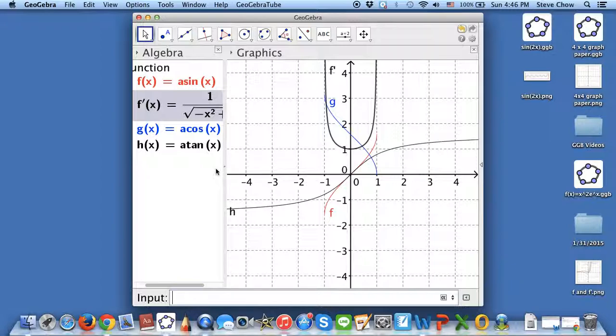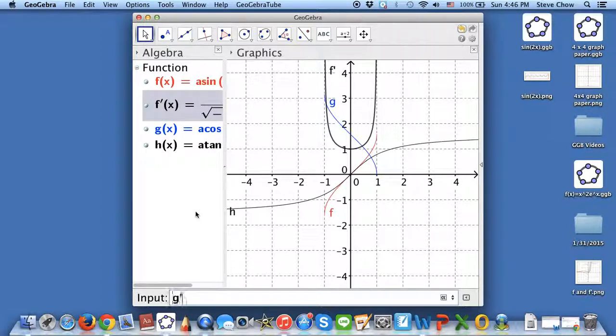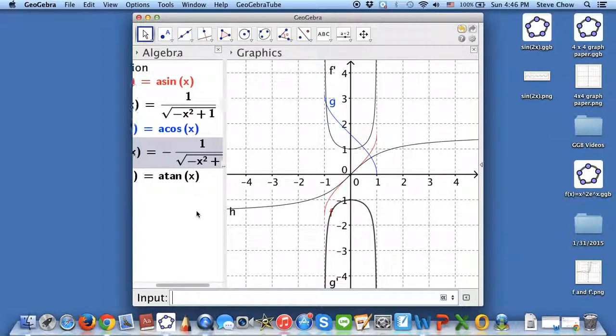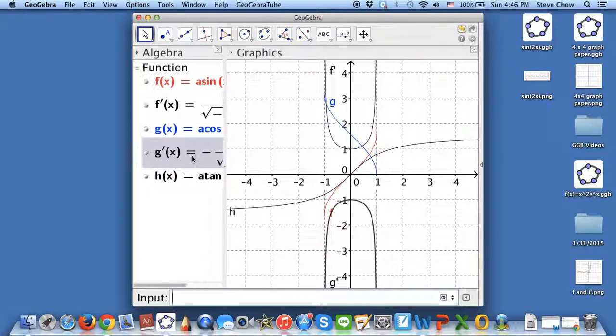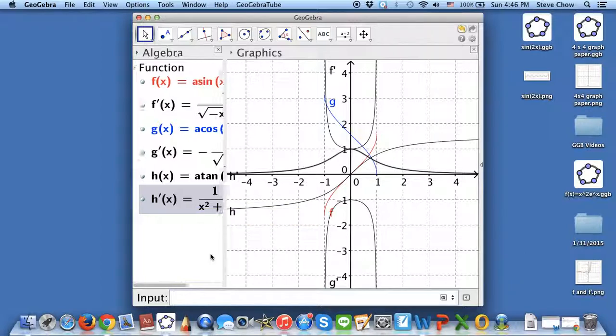So, very cool, right? And perhaps you can just do g prime of x. And that's the derivative of inverse cosine. And h prime of x, derivative of inverse tangent.